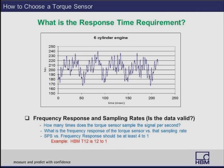What is the response time requirement of your application? Modern torque sensors can be viewed as rotating accelerometers, capable of measuring torsional noise or vibration. It's important to know if your torque sensor has sufficient response time and sampling rate to capture these torsional vibrations. An example is the HBM T12, which samples at 72,000 samples per second. To avoid aliasing, the ratio between sampling rate and frequency response should be at least 4:1 — the T12 achieves 12:1. If response time and sampling rate are important, make sure your torque sensor can accommodate that measurement.